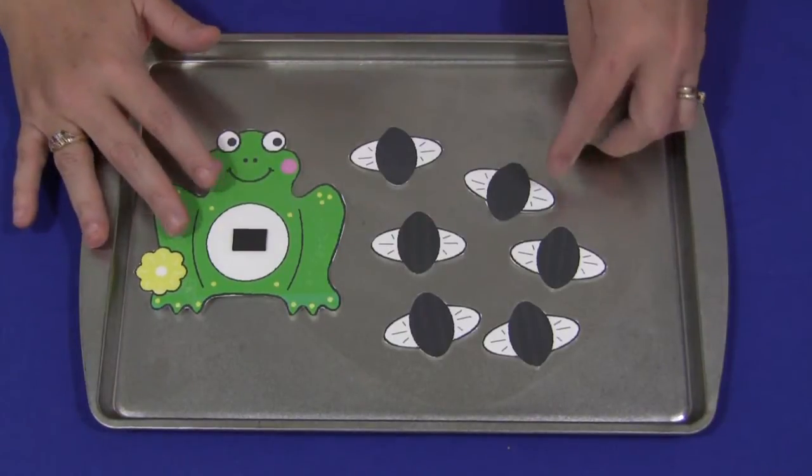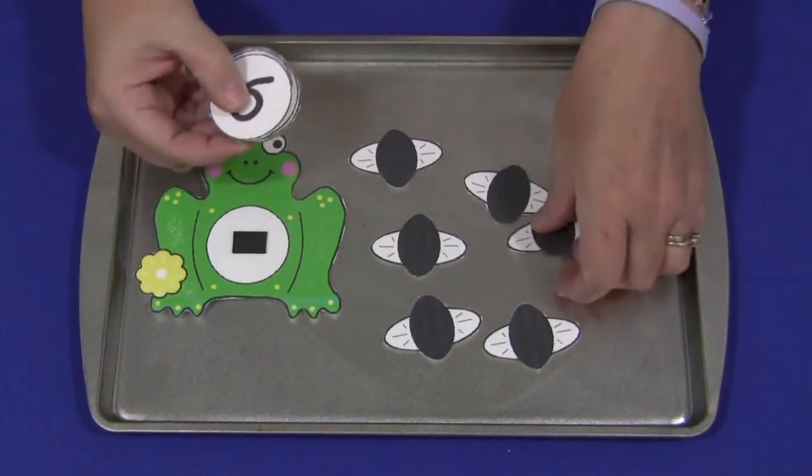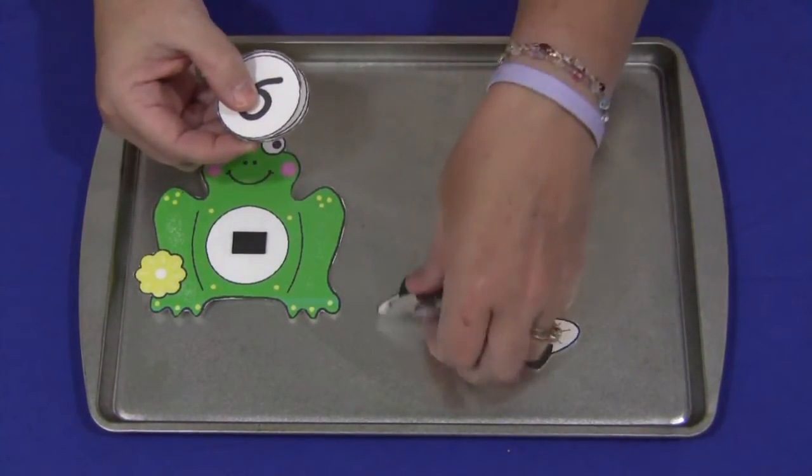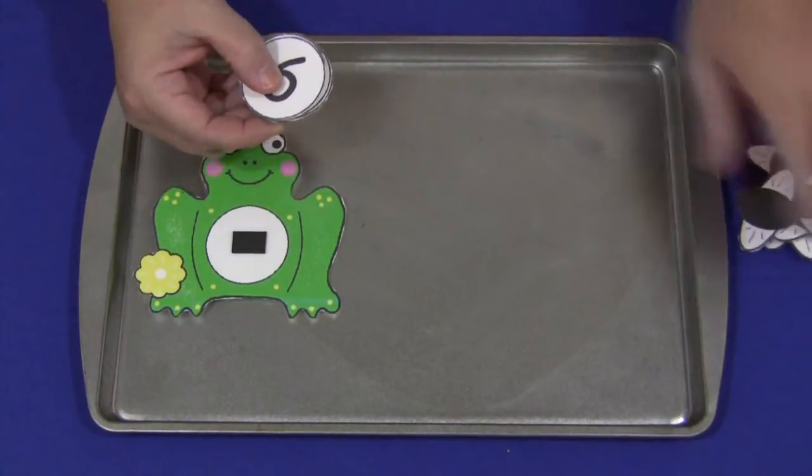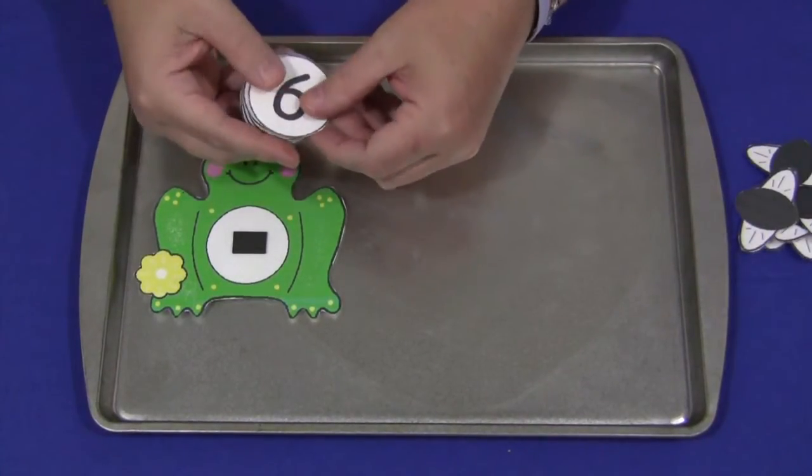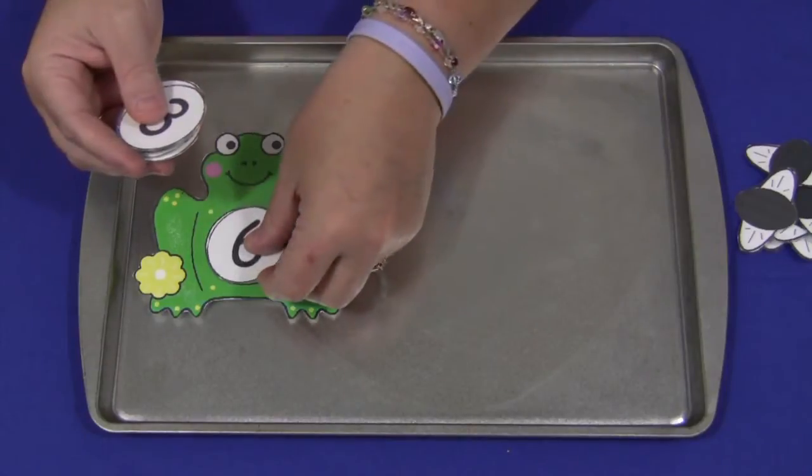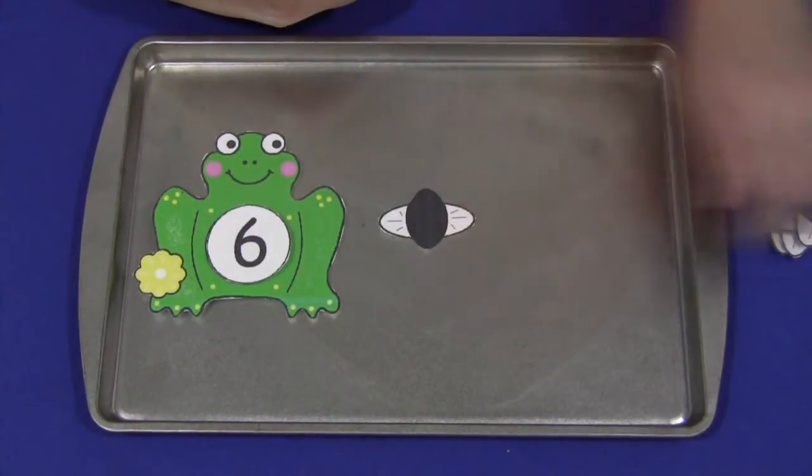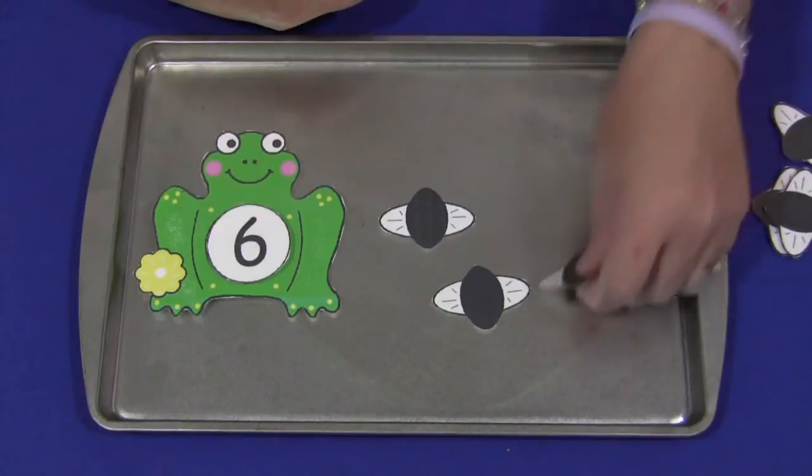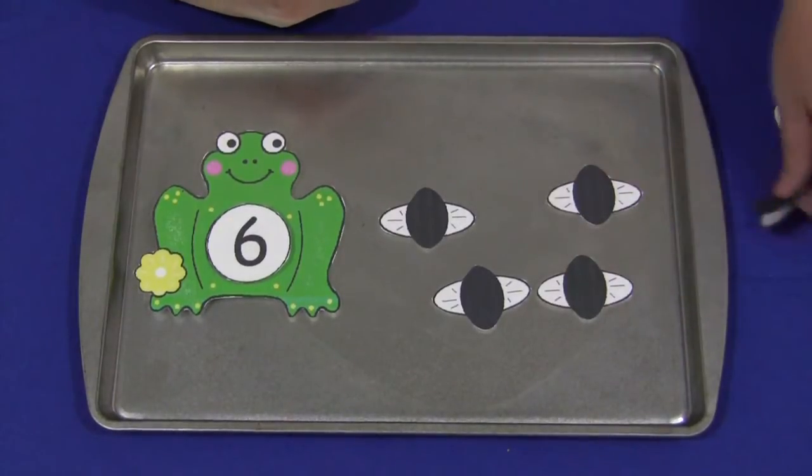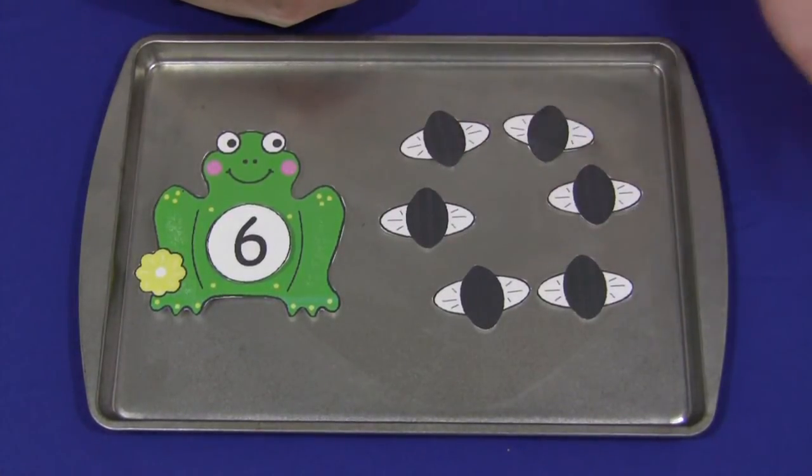What you would do is you would have the frog sitting out, the number circle sitting out, and the flies off to the side in a pile. The child or the teacher, depending on the age, would select a number, and then the child would put the correct amount of flies that matches the number that's on the frog body. So that was six, and then we needed to put six in.